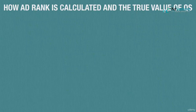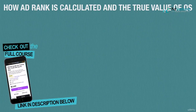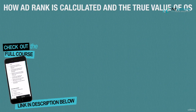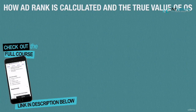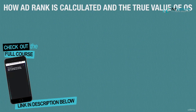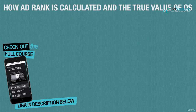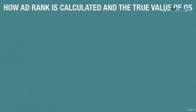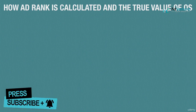We're going to start talking about how to calculate ad rank and your actual CPC. Now that you understand quality score and the auction, we're going to really dive into the modern day Google AdWords auction — understanding what your ad rank number is, how it determines your place in the auction, and how the actual auction works to determine what you pay when your ad gets clicked on.